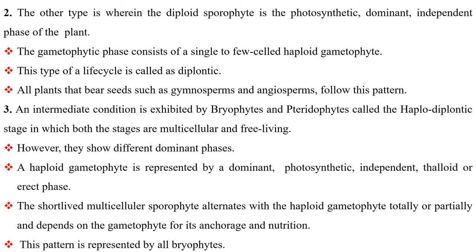The other type is one wherein the diploid sporophyte is the photosynthetic dominant independent phase of the plant. The gametophytic phase consists of a single to few-celled haploid gametophyte. This type of life cycle is called diplontic. All plants that bear seeds, such as gymnosperms and angiosperms, follow this pattern.